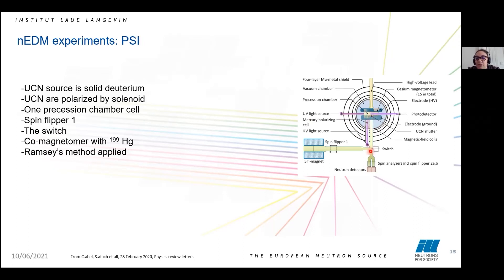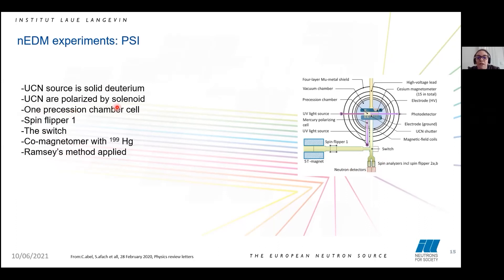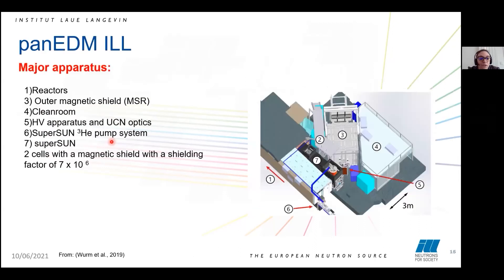Because PSI uses just one precession chamber, it is important that they can normalize the measurement using the mercury co-magnetometer. This is the instrument at ILL — a big overview. This is the reactor, this is the outer magnetic shield, this is the clean room, here is the high voltage apparatus, and here is the superfluid helium pump system. The superfluid helium is a new source of ultra-cold neutrons at ILL. Cold neutrons enter in this direction, and inside this part the superfluid helium converts cold neutrons into ultra-cold neutrons through an inelastic scattering event. Helium is not able to absorb a neutron, but there is some neutron loss due to heating of the tube walls.